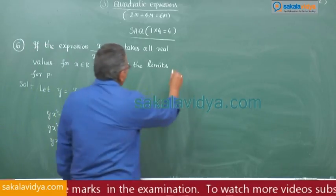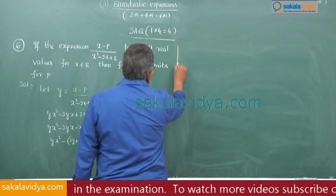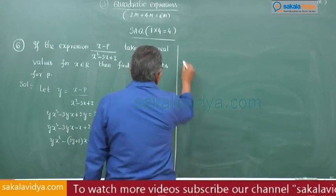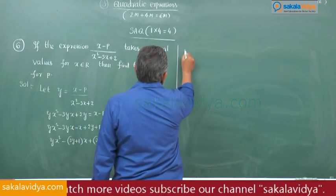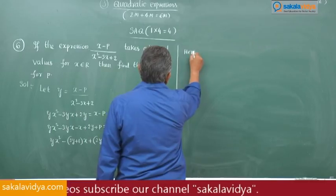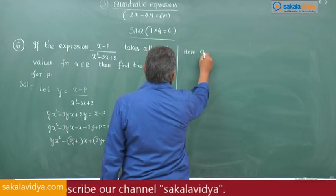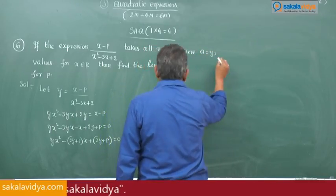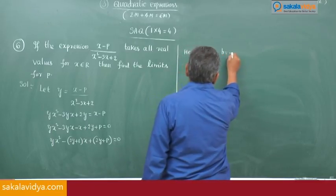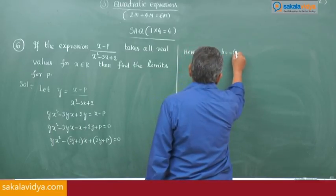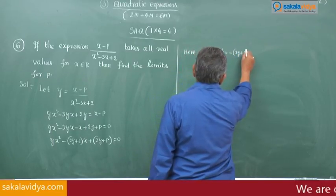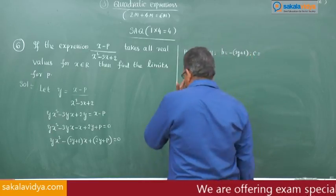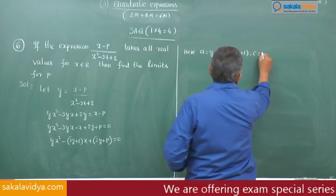Equating to the standard form Ax squared plus Bx plus C equals 0, here A equals y, B equals minus(3y plus 1), and C equals (2y plus p).